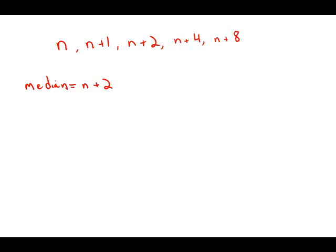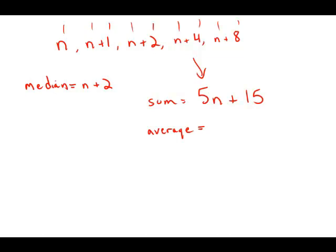To find the mean, what we need to do is add these five numbers up. What we get is n plus n plus n plus n plus n — that's 5n — and then 0 plus 1 plus 2 plus 4 plus 8, which is 15. So the sum is 5n plus 15. If I divide that by 5, because there are five numbers on the list, that's n plus 3. That's the average, or the mean, of the list.